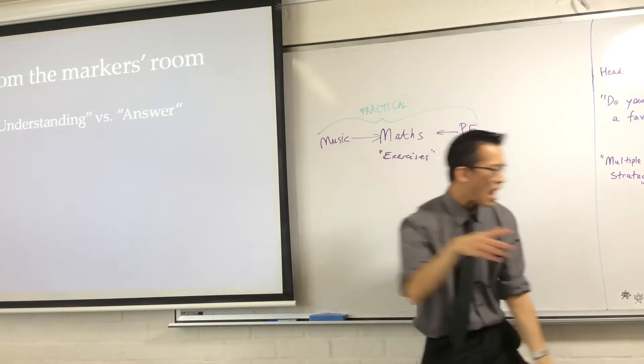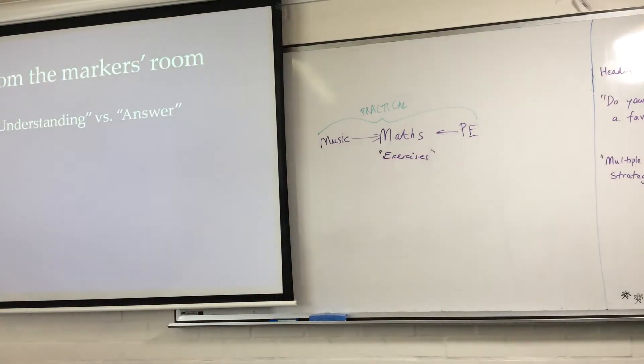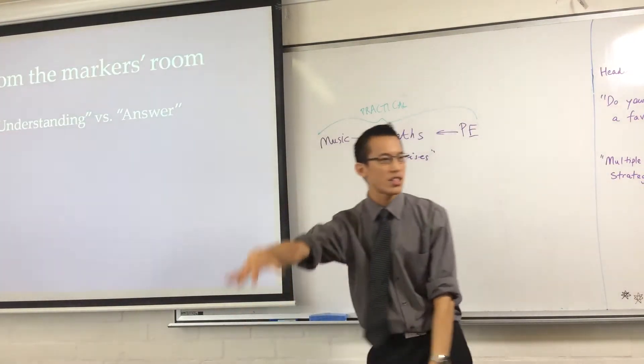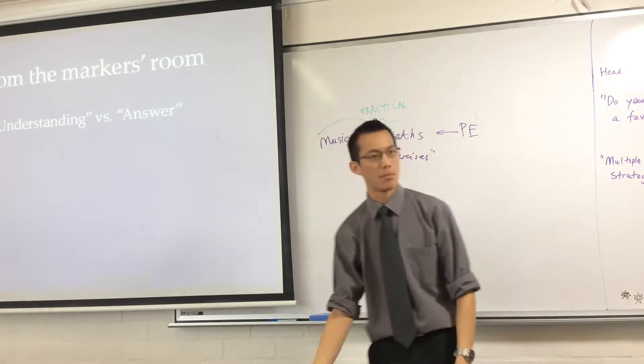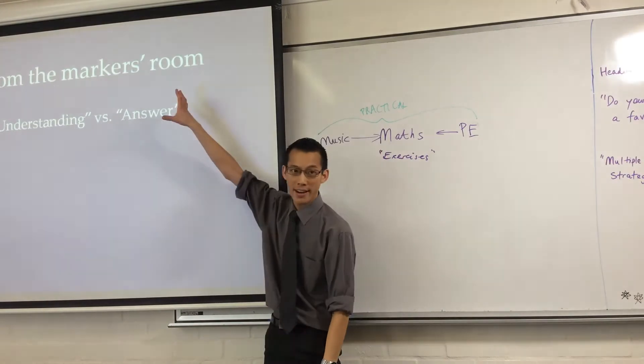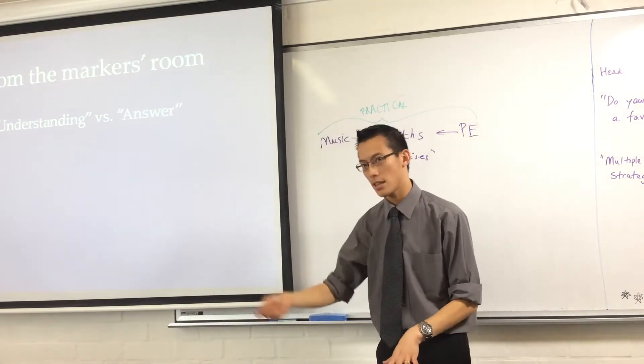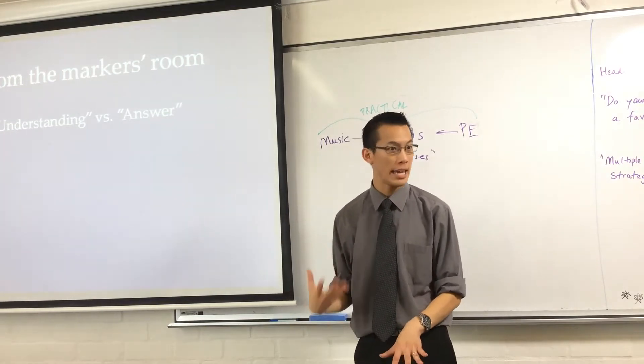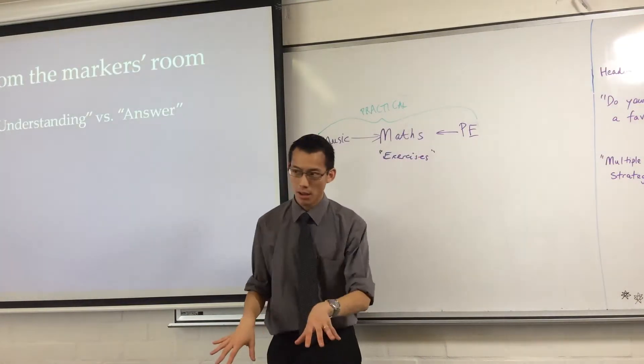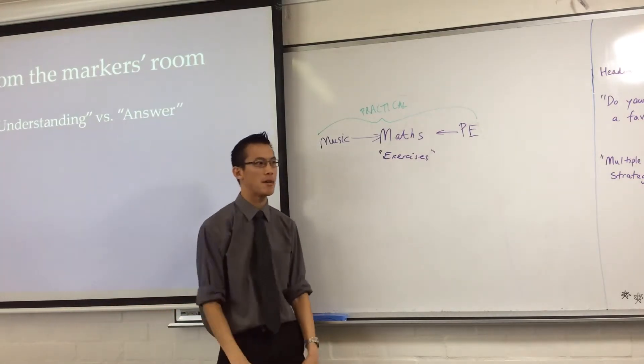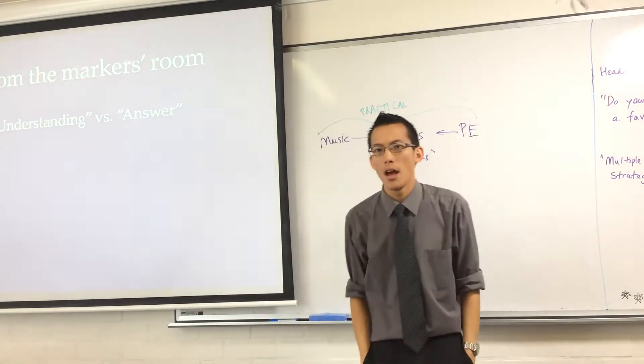And we have these thousands and thousands of stacks and stacks of manuscripts, and hundreds and hundreds of students each, and we have to mark these things. When you do that, when you see so many students going past you, you start to see the same kinds of problems again and again. And you realize what people are good at and what they're not so good at. This is a big problem that's been identified by HSC markers again and again, particularly in maths.